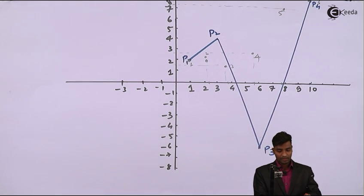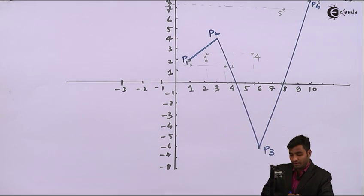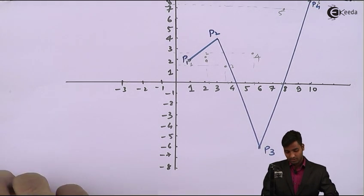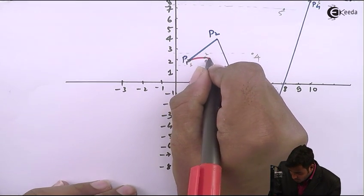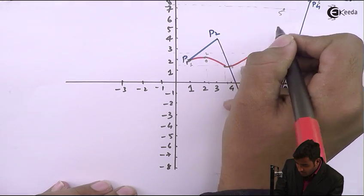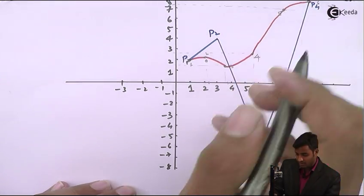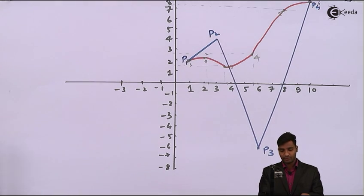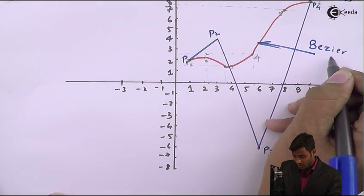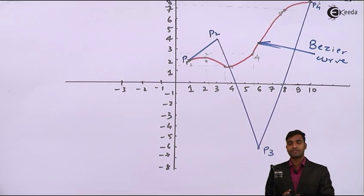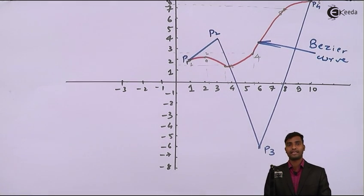Now I will develop the curve by joining all these points: 1 to 2, 2 to 3, 3 to 4, 4 to 5, and 5 to 6. This curve is called the Bezier curve. We have successfully plotted the Bezier curve. Thank you.